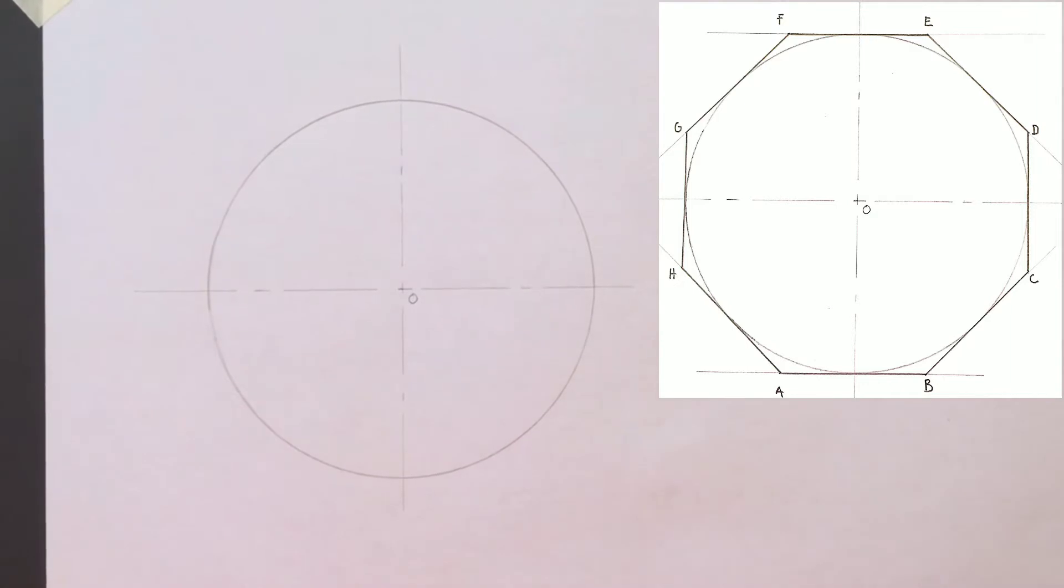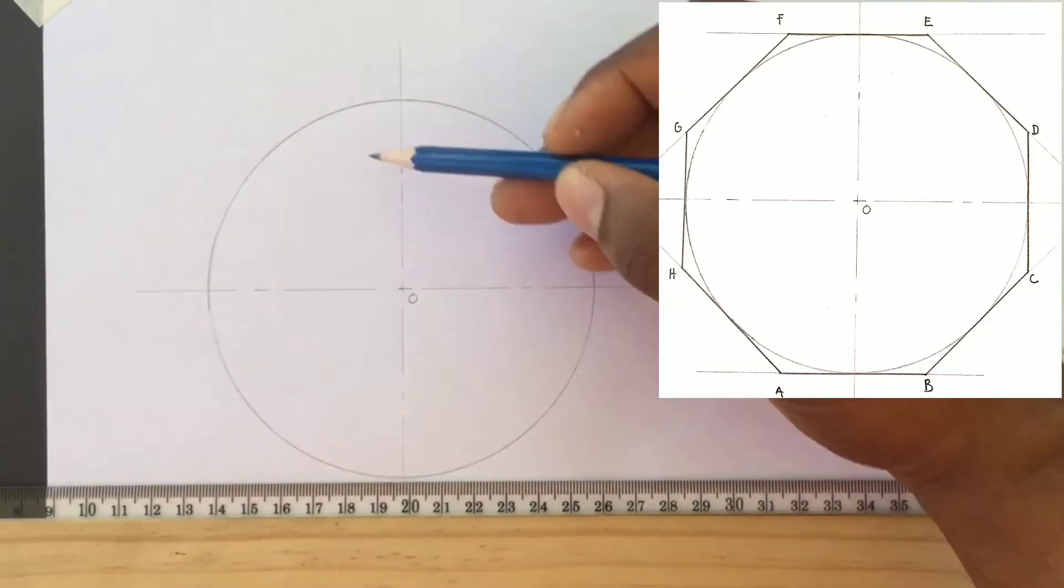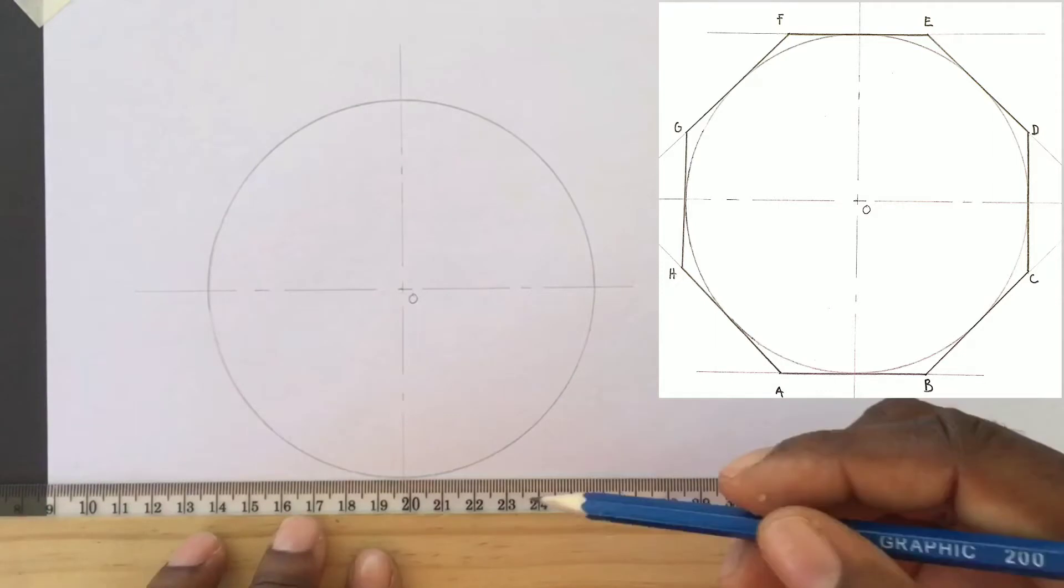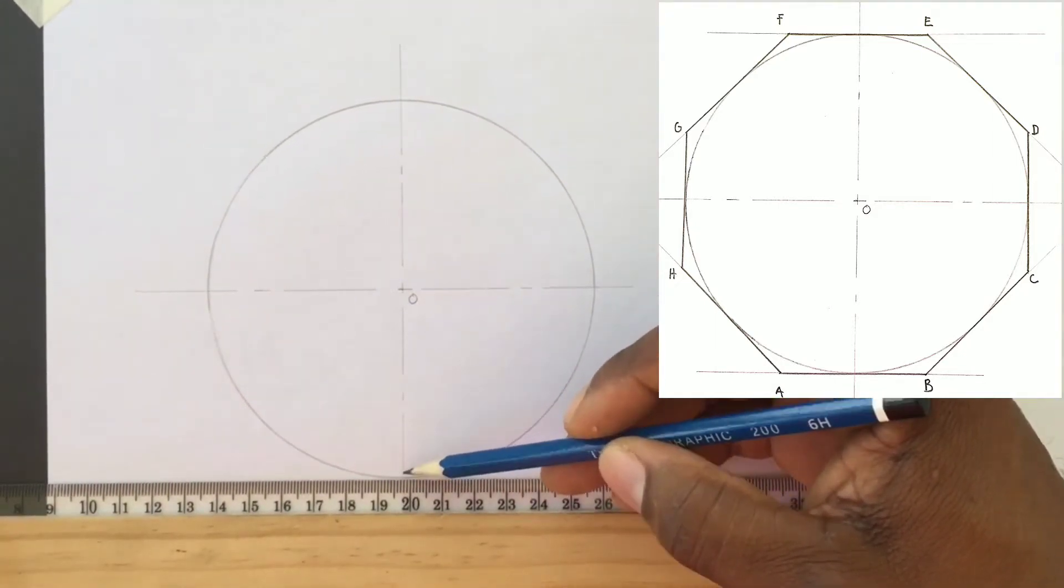We will now use our t-square to draw tangents to the lower section and the upper section of our circle. Ensure your t-square is held firmly against your drawing board.